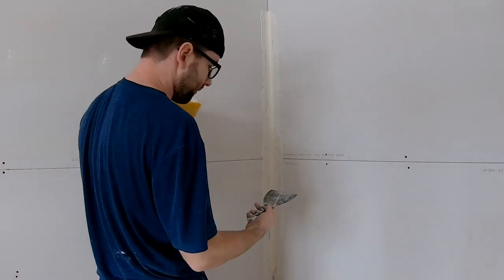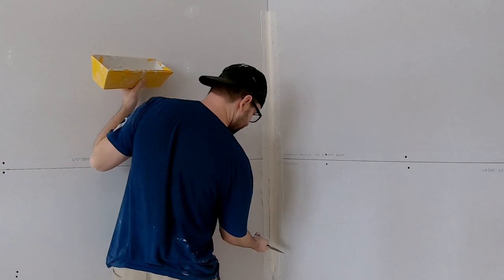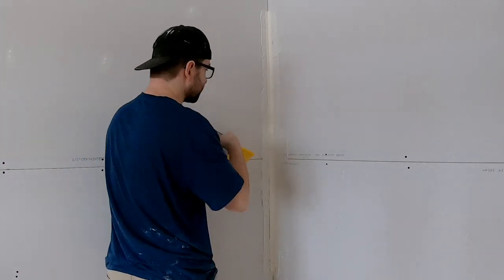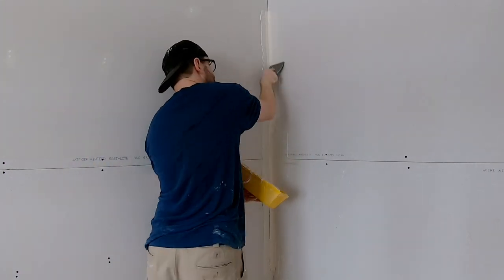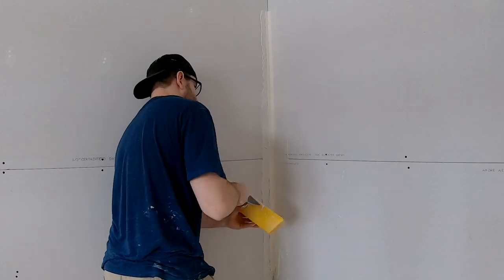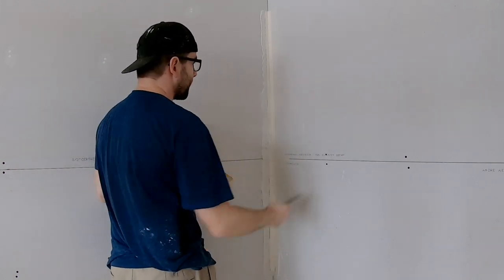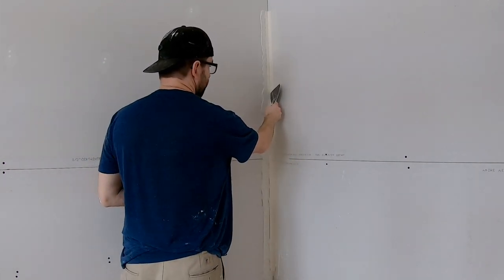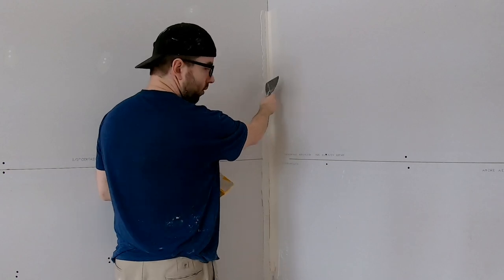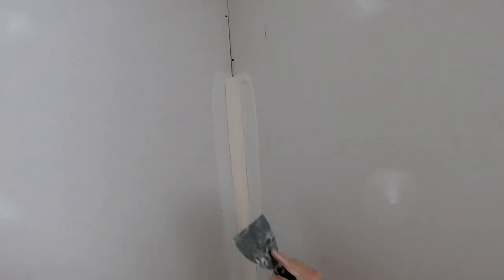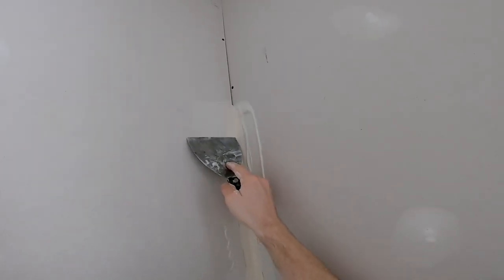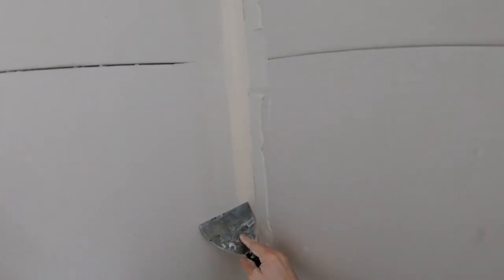Next, take your knife. I'm using a 5 inch knife and just lightly take the compound off. Be careful that you're not pushing too hard into the apex of the corner or you could tear it. Just light passes. Several strokes on each side to get it right.